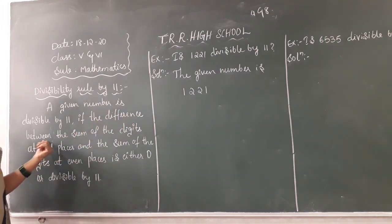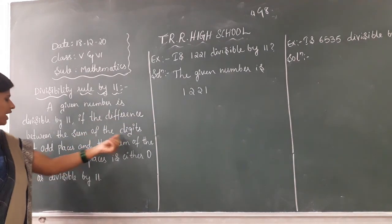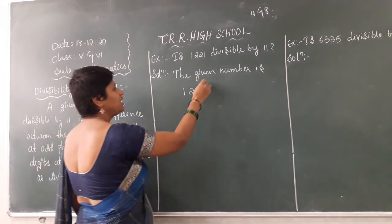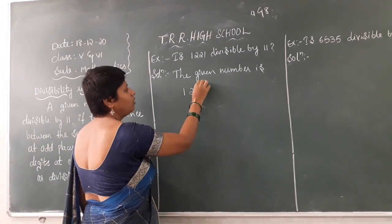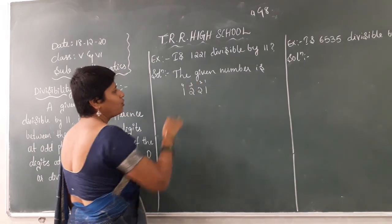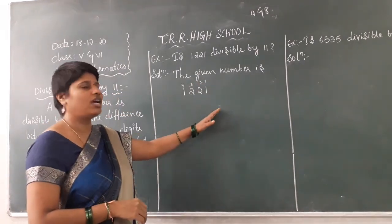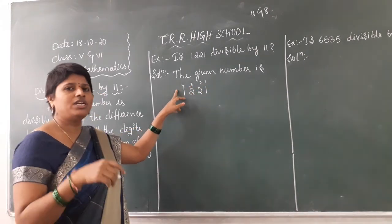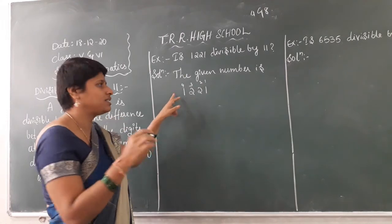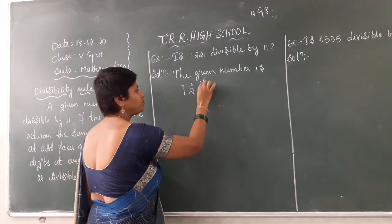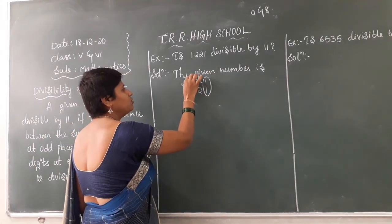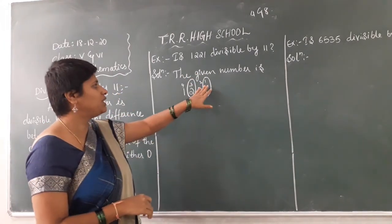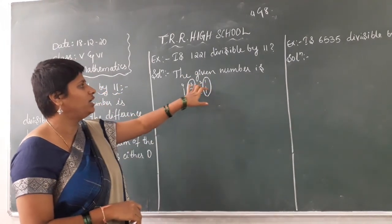The difference between the sum of the digits at odd places — odd or even means you just give numbers from the right side: 1, 2, 3, 4. From the right side onwards you name each position 1, 2, 3, 4. Circle the odd places. Odd places are positions 1 and 3.